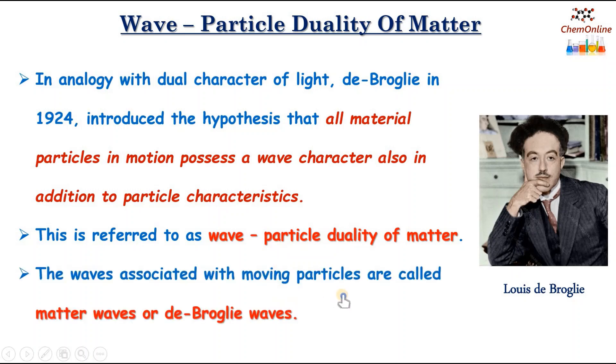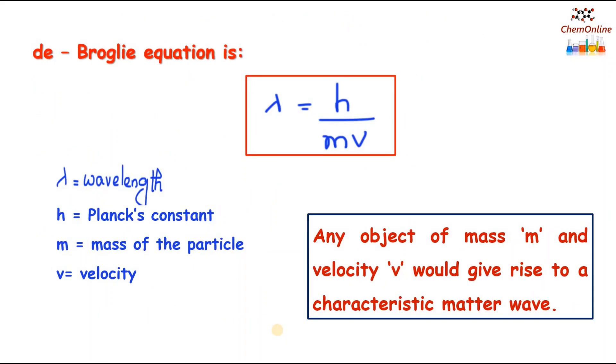The waves associated with moving particles are called matter waves or de Broglie waves. And de Broglie proposed an equation which relates the wave nature to the particle nature and that is lambda equals h by mv. Well, lambda is the wavelength, h is the Planck's constant, m is the mass of the particle moving with the velocity v. So, any object of mass m and velocity v would give rise to a characteristic matter wave.